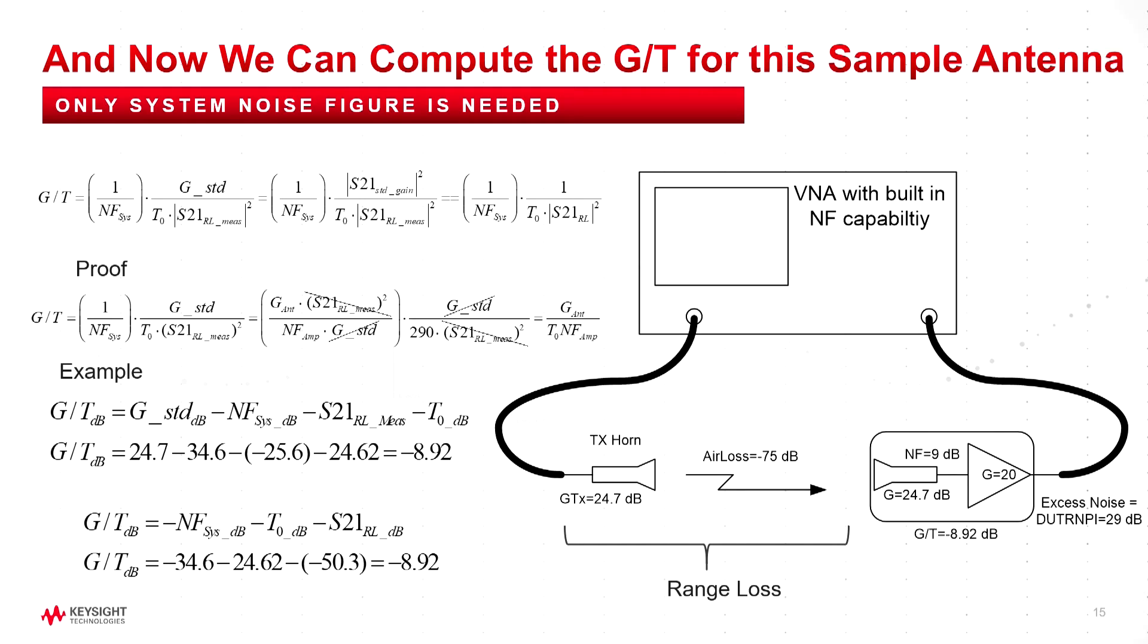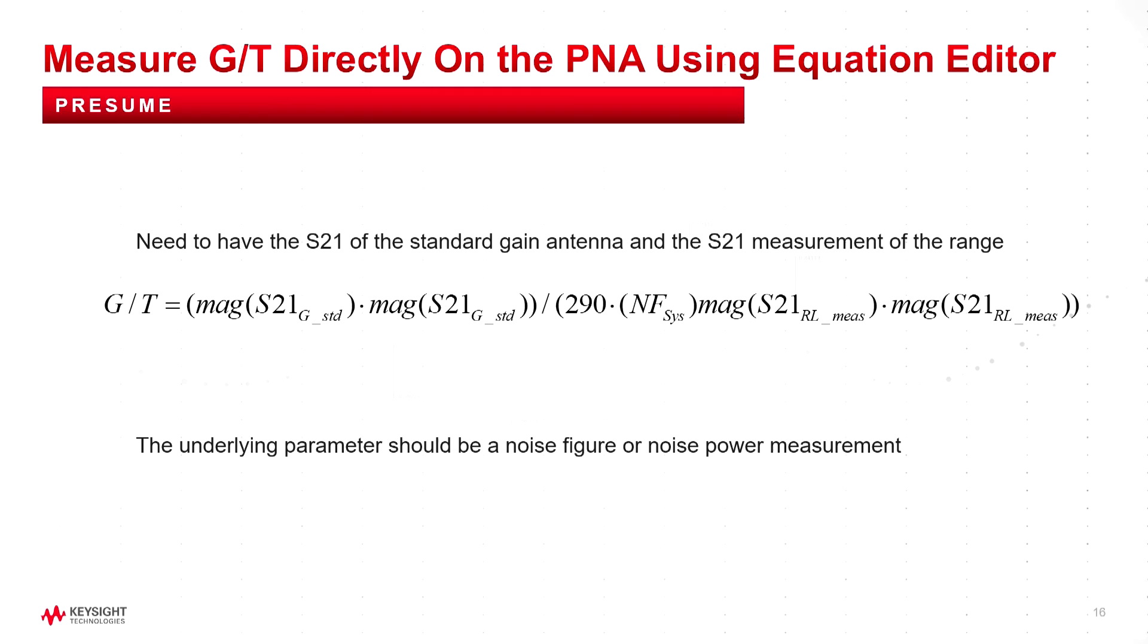The point of all of this is, this is the formula we will use to measure the G/T of an antenna. You can even put it into an equation editor, so you can show it directly on the trace, and remind you that you have to use the mag squared of S21 if the system noise figure is in dBs.